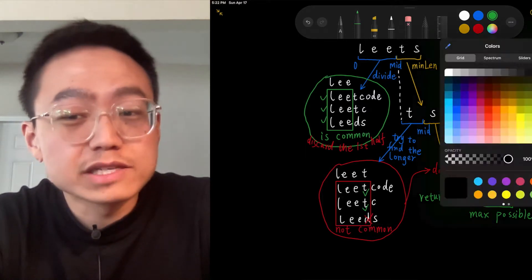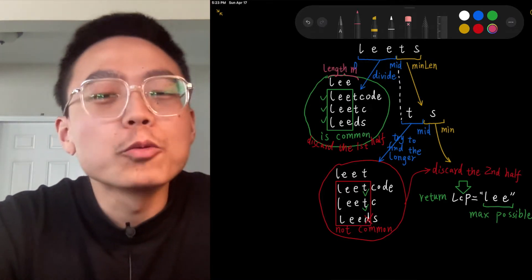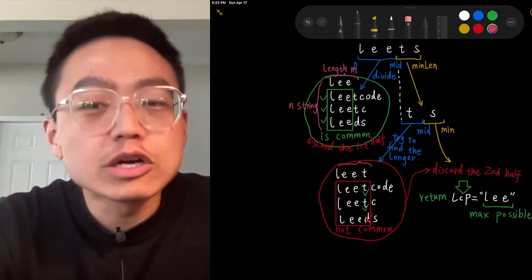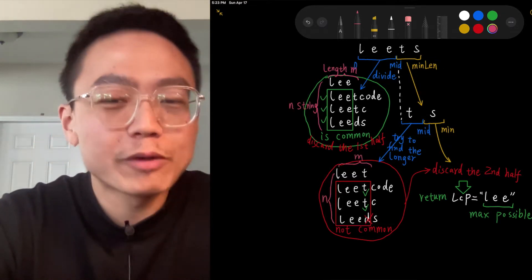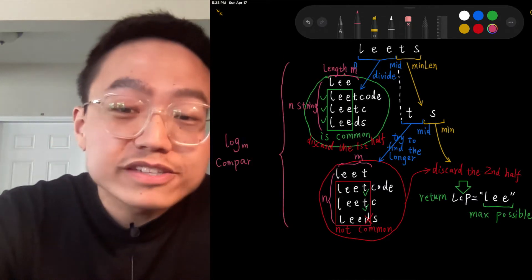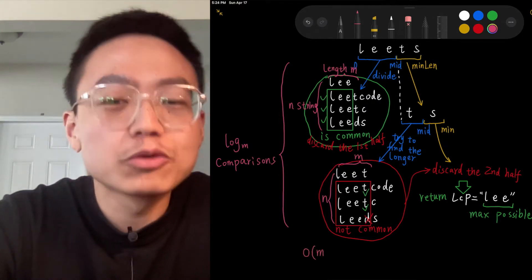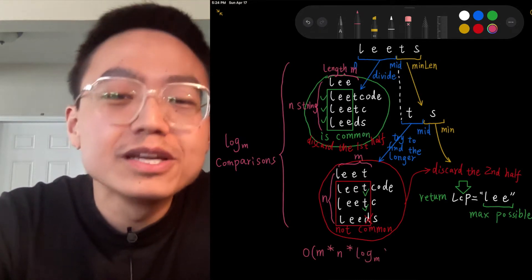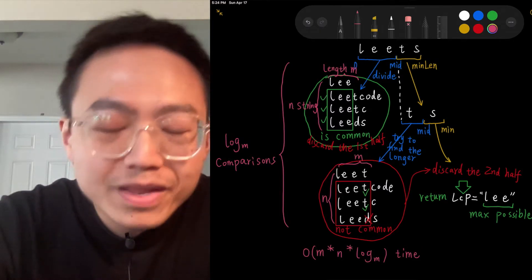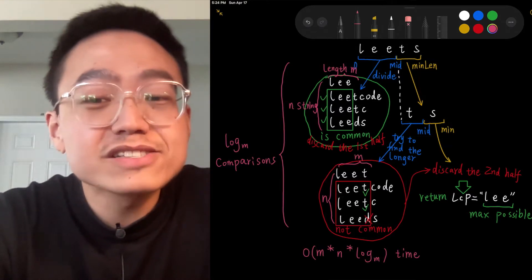Then we can discard the second half of the search space. Let's analyze the complexity. In the worst case, we have n equal strings each with length n. The time complexity is O(S * log n), where S is the sum of all characters in all strings. The algorithm makes log n iterations, and for each of them there are S equal to m multiplied by n comparisons, giving a total time complexity of O(S * log n). The space complexity is O(1) because we only use constant extra space.